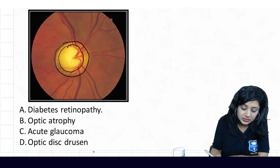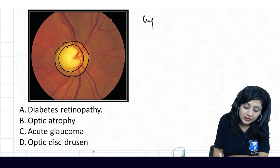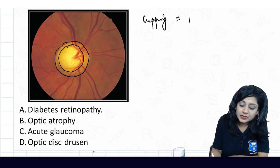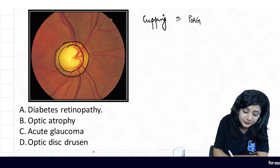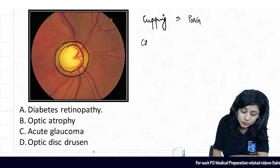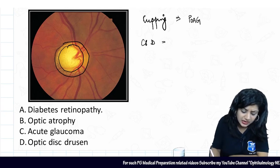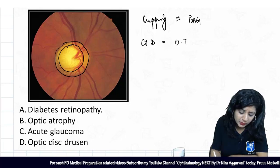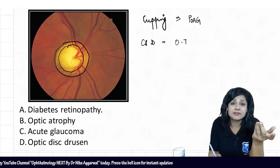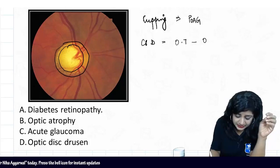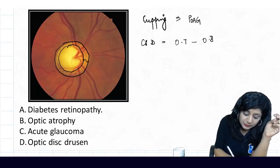This is actually cupping. Where do you get cupping? We get cupping in cases of chronic simple glaucoma or primary open angle glaucoma. You can see here the CD ratio is quite large - somewhere around 0.7 or 0.8 - and a very thin rim.